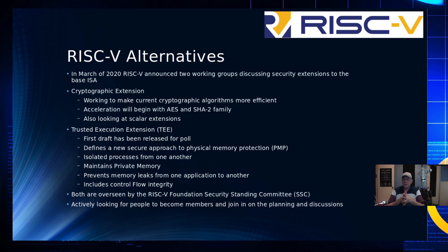They're certainly looking for any class of people that can help define this, and I think that's great. They're trying to define a new security approach to physical memory protection (PMP), but also how to isolate one process from another — not only as it's executing in the CPU or being cached, but also how to maintain isolation between areas of private memory that the application and CPU are using. How do you prevent memory leaks from one application into another, and fence those off securely?